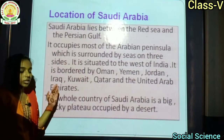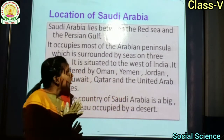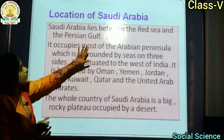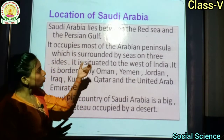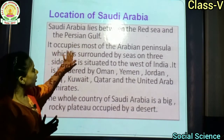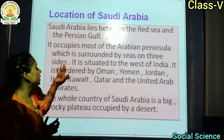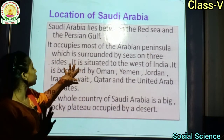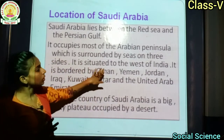In this chapter, we will study about Saudi Arabia. Saudi Arabia lies between the Red Sea and the Persian Gulf — यह Red Sea और Persian Gulf के बीच में आता है. It occupies most of the Arabian Peninsula, which is surrounded by seas on three sides. It is situated to the west of India — यह India के west side में situated है.